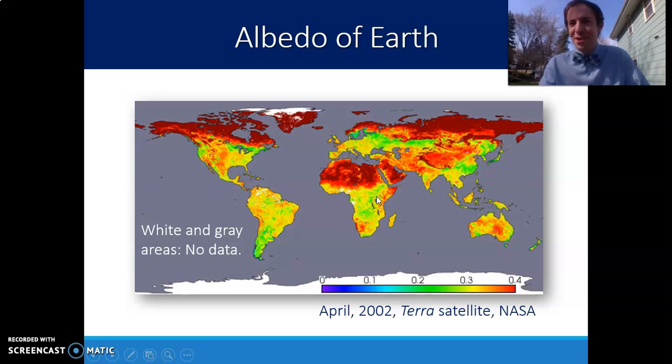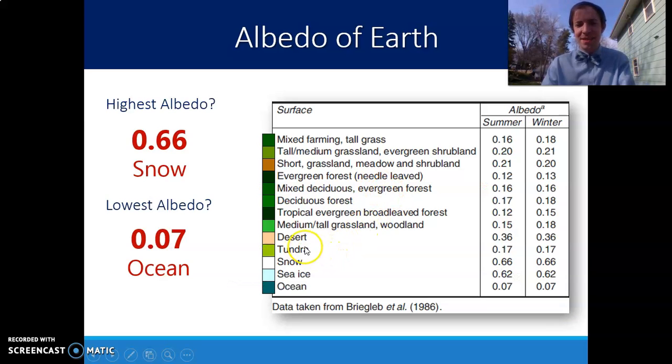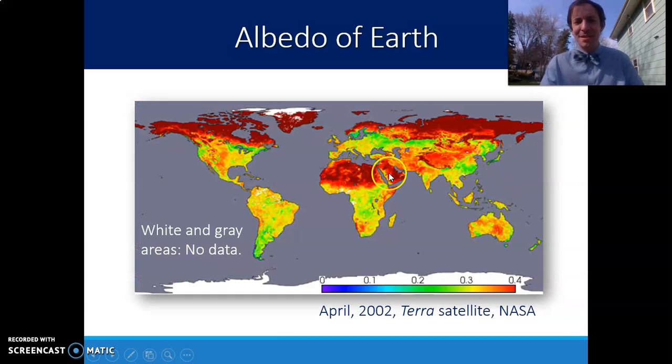This is testing your geography a little bit. But something that is really important to know about in this area of Africa is the Sahara Desert. So one of the reasons for the high albedo here is because desert is also something with a pretty high albedo. Maybe not as high as snow and ice, but that reflectivity of the sand is making that a pretty high level as well.